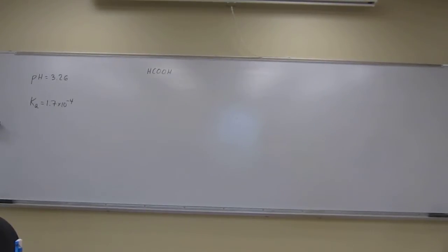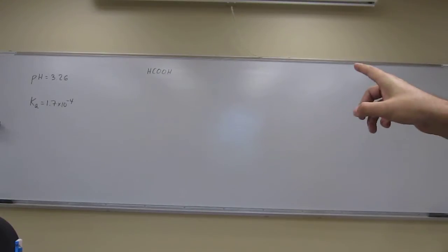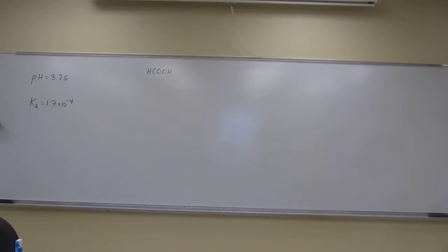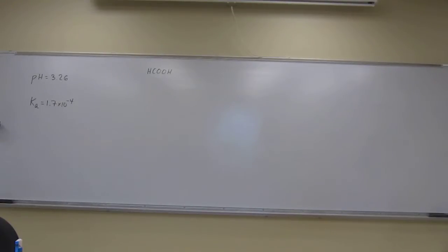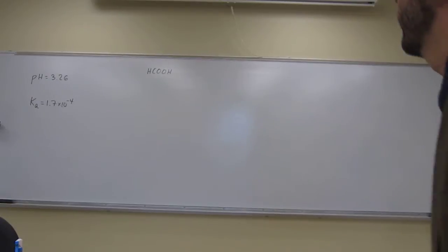Let's try one of these weak acid problems where we're going to calculate the original molarity from the pH of the solution. This one says: what is the original molarity of a solution of formic acid, HCOOH, whose pH is 3.26 at equilibrium? The other thing you have to know for this problem is the Ka, which is 1.7 times 10 to the negative 4 — you find that from a table. I've already written that up there.